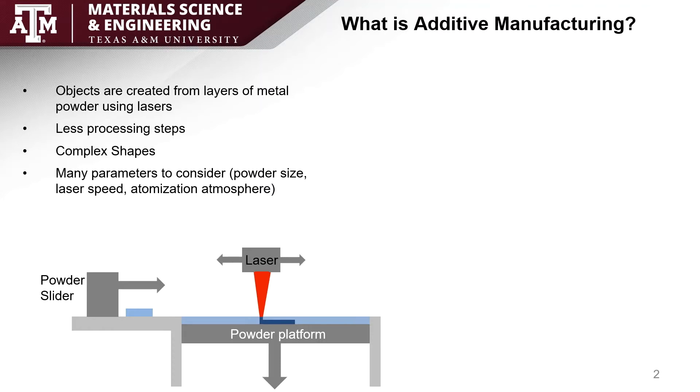You can also create more complex shapes that have varying weight and microstructure than what you would typically see. There are also a lot of parameters you do have to consider with additive manufacturing, things like powder size, laser speed, and atomization atmosphere. Often these parameters can affect one another and change the overall part quality.